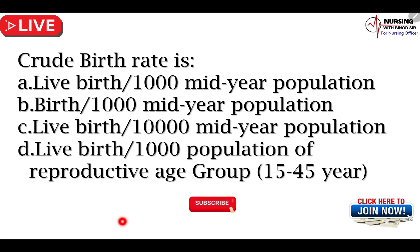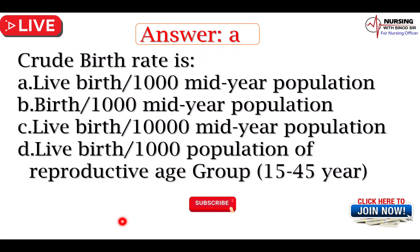Now we can proceed to the next question। Crude birth rate क्या है? A option — live birth by 1000 mid-year population, B option — birth by 1000 mid-year population, C option — live birth by 10,000 mid-year population, D option — live birth by 1000 population of reproductive age। Answer — A option: live birth divided by 1000 mid-year population।